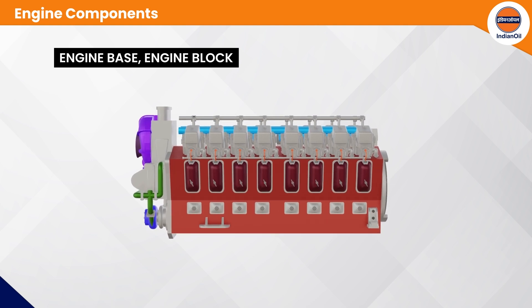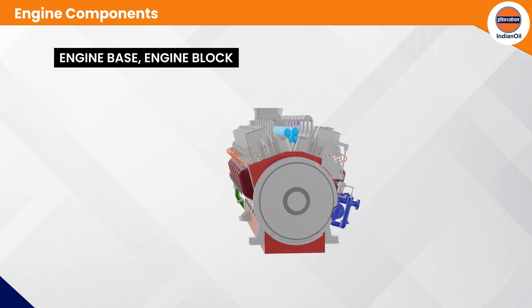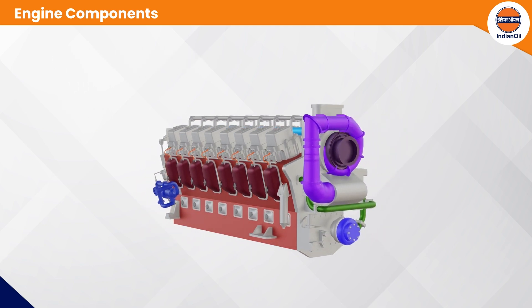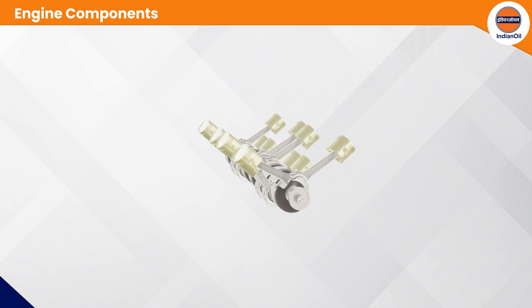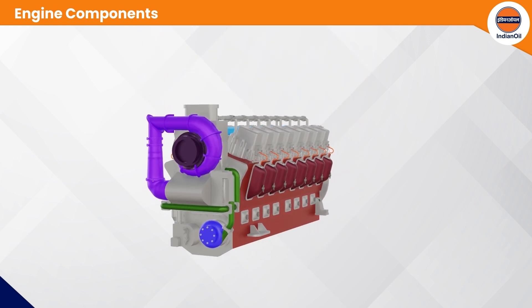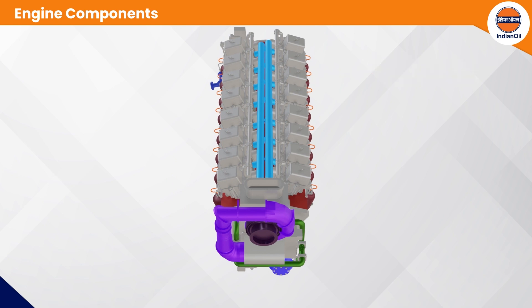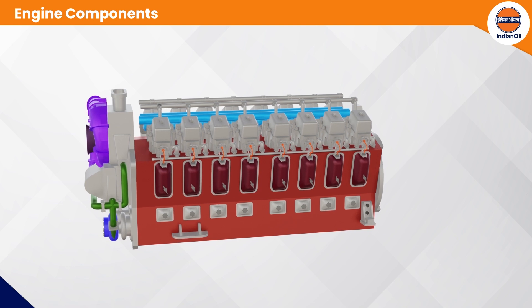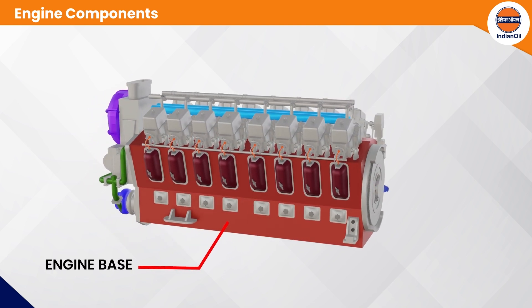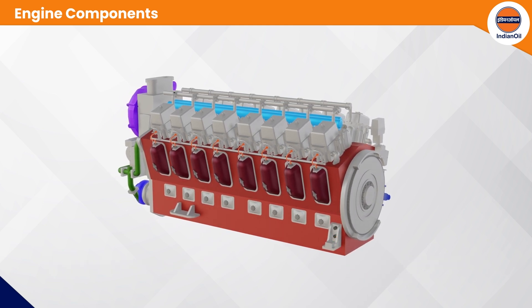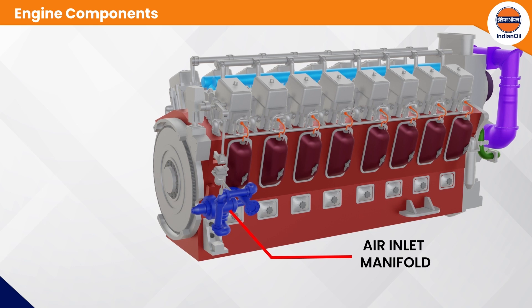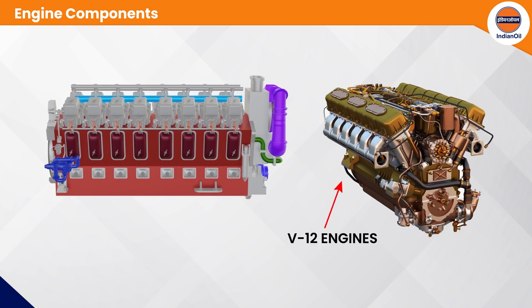The engine block houses eight cylinders on each side in a V8 arrangement, allowing a total of 16 cylinders to be fitted in an engine block. There is a cavity for cooling water circulation. The engine block is made of steel plate welded together and mounted on an engine base with nuts and bolts. A V-type gallery is provided as an air inlet manifold. The engine may also have a V12 design, like in the WDG 4G diesel locomotives being designed by GE WAPTEC for Indian Railways.